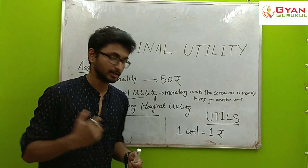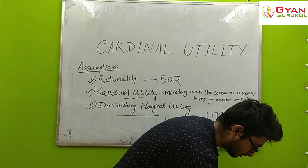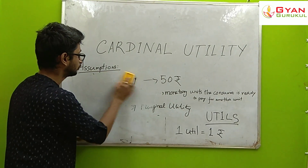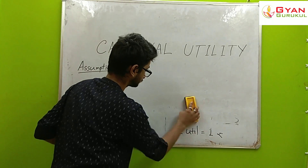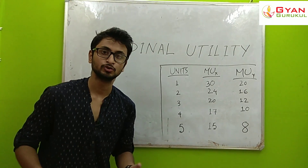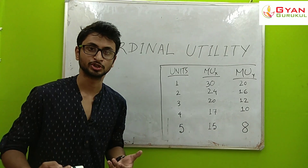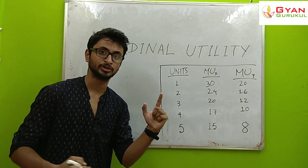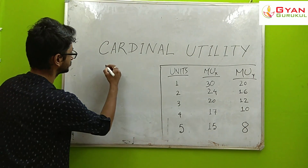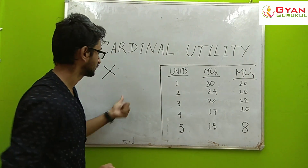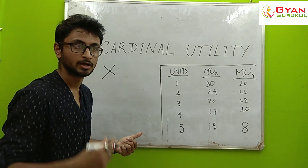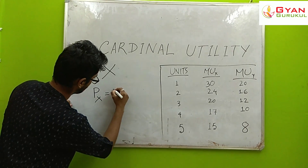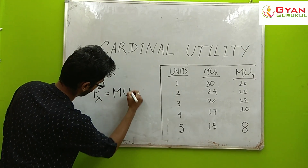Now, what is the Cardinal Utility consumer equilibrium condition? Suppose the consumer is consuming only one commodity, X. The equilibrium condition is that the Price of X is equal to the Marginal Utility of X.